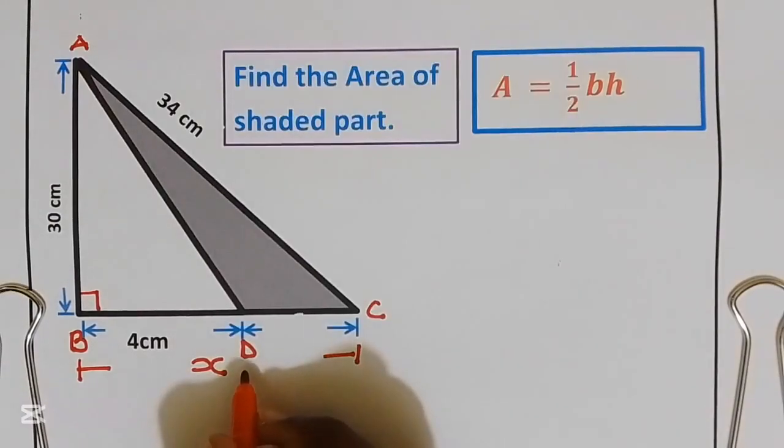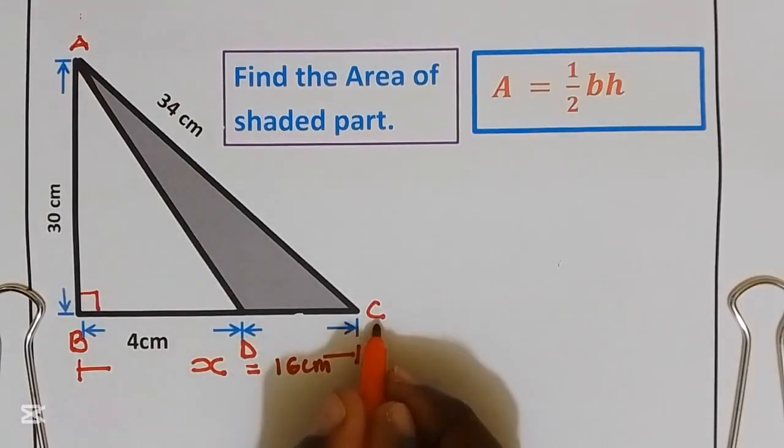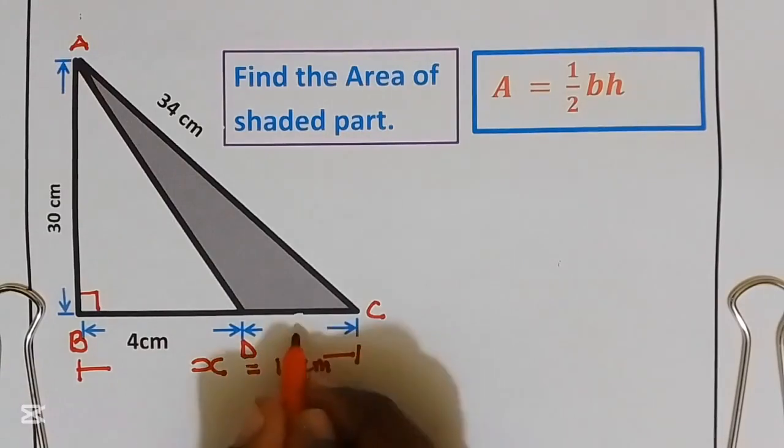So we already know distance BC is equal to 16 centimeters. Now it is easy for us to get the distance DC. Let's call distance DC equal to Y.